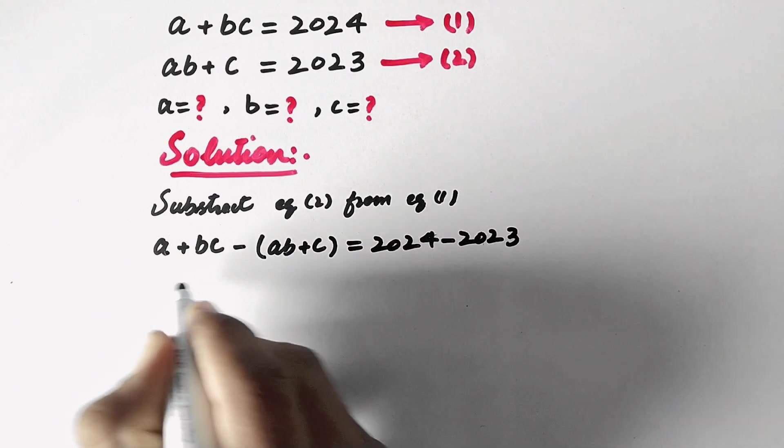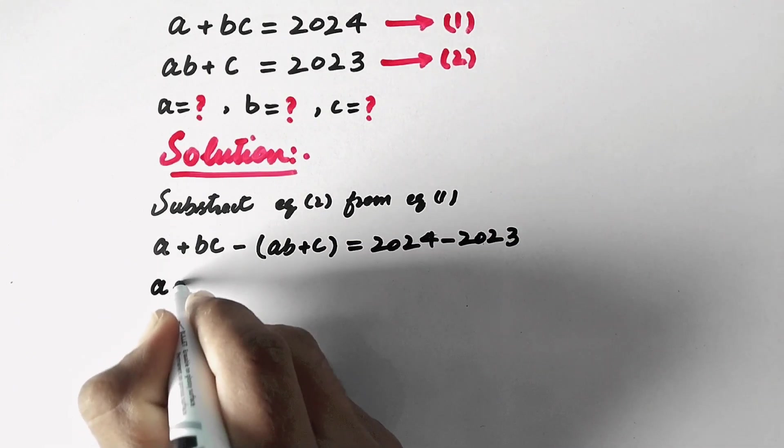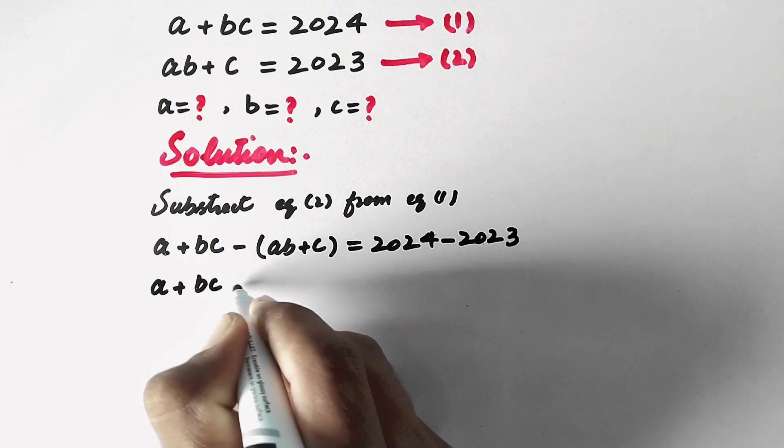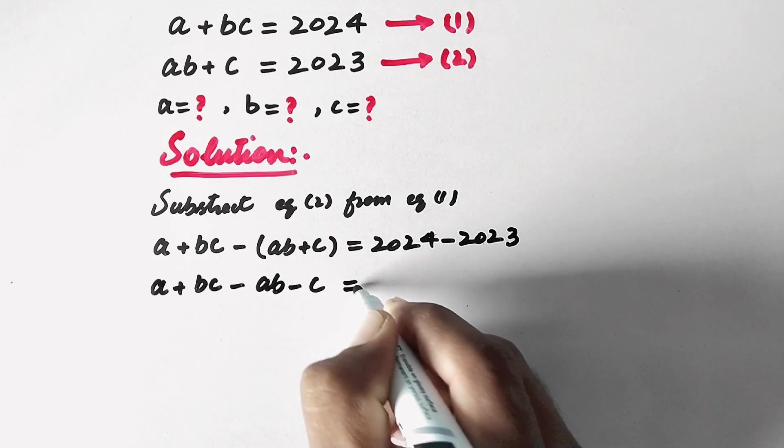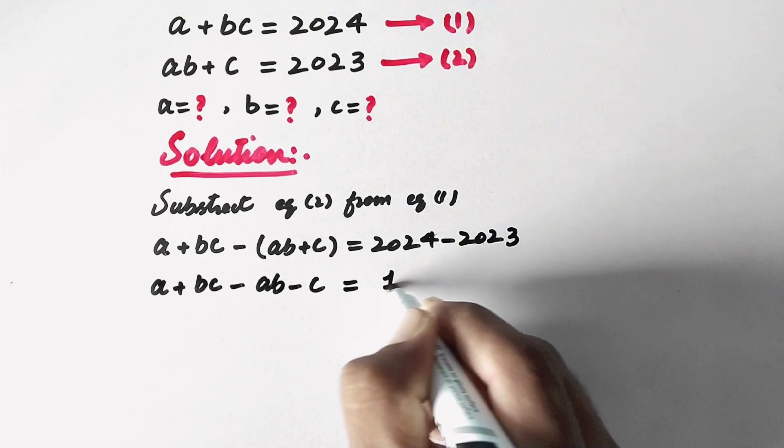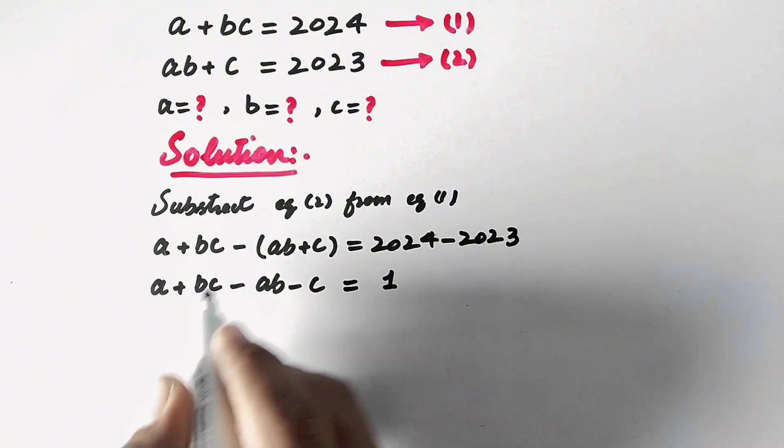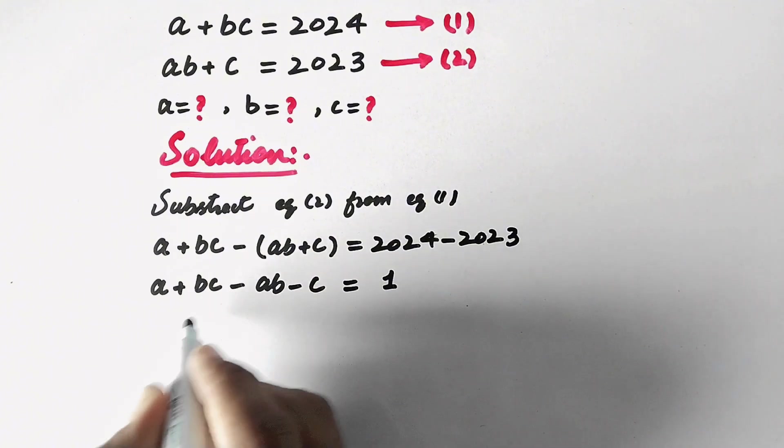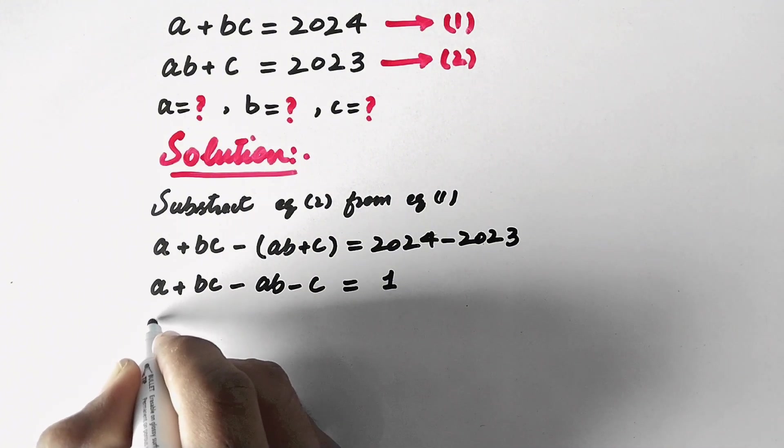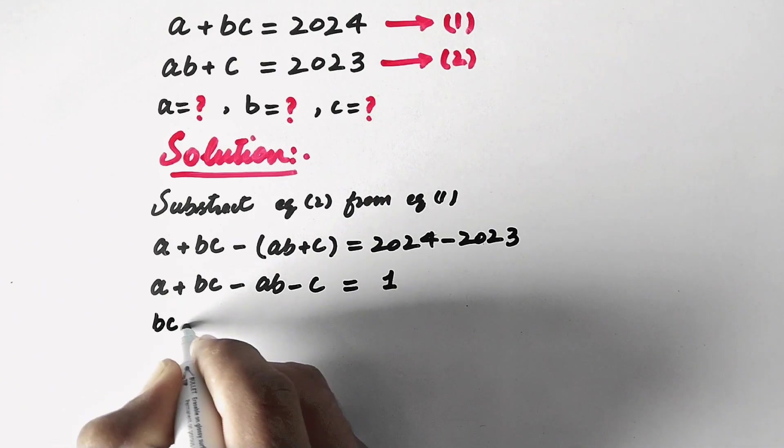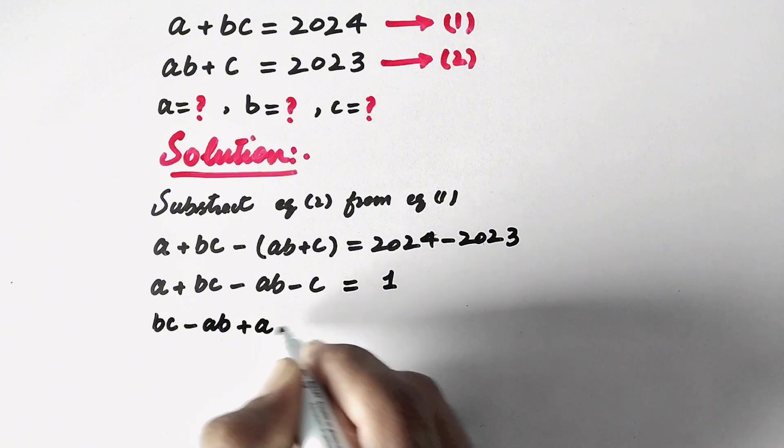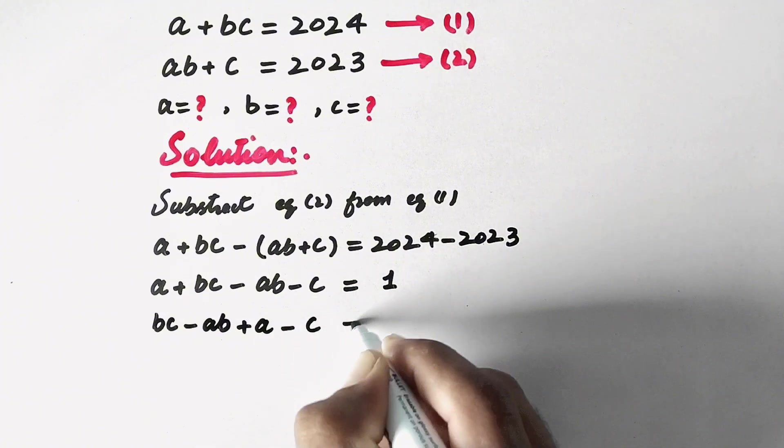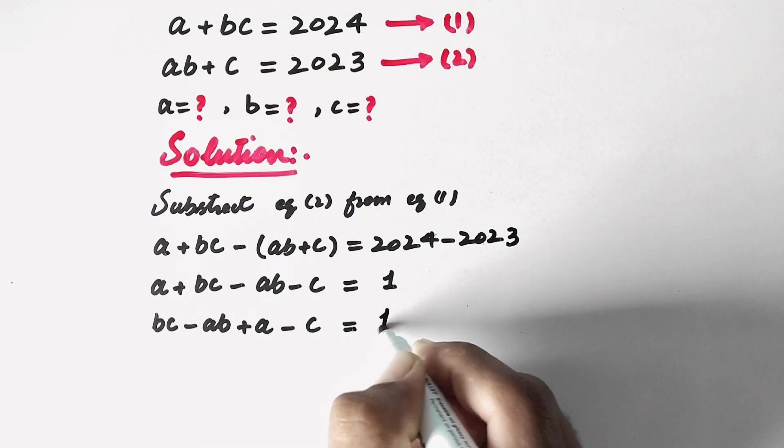And now in the next step it will be A plus BC minus AB minus C equals 1. And now we will rearrange the left-hand side in this form: BC minus AB plus A minus C equals 1.